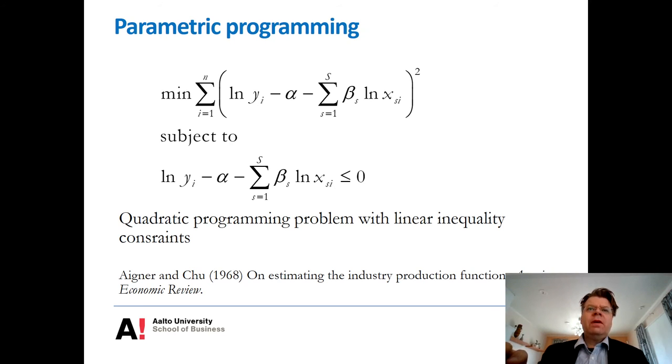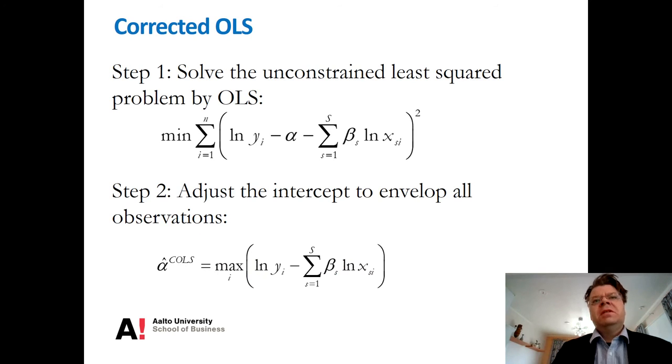An alternative way of estimating this kind of deterministic model would be to resort to a stepwise estimation, which is referred to as corrected ordinary least squares. And interestingly, this kind of approach was already suggested by Winston in his comments to Michael Farrell's 1957 paper. So, the idea really goes back to the roots of the efficiency analysis.